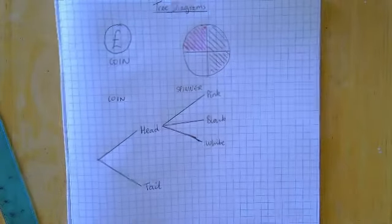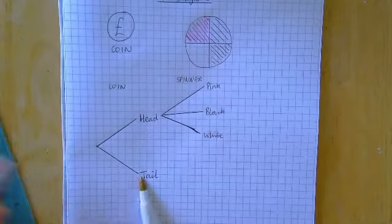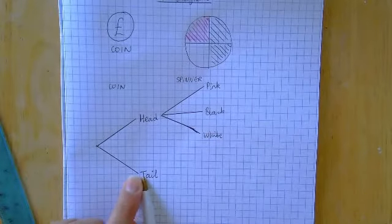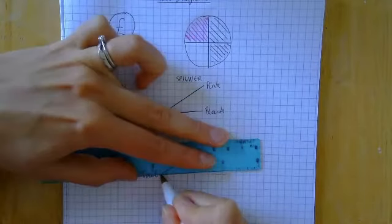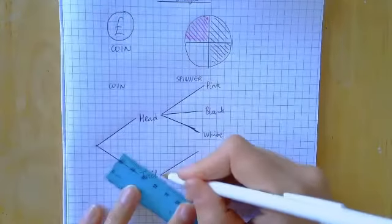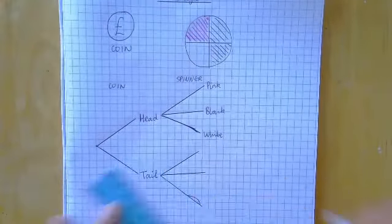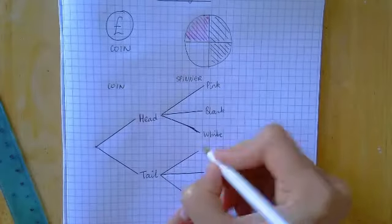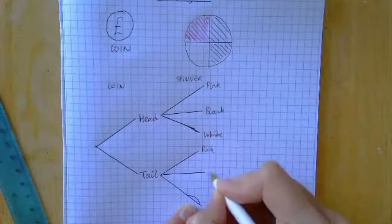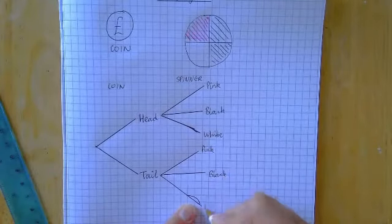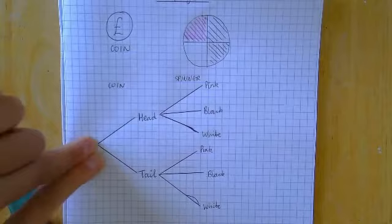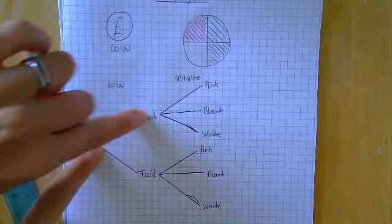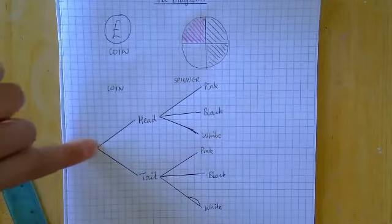Now imagine we got a tail on our coin and then spin the spinner. I've still got three options — I'm still going to either get pink, black, or white. Imagine walking along the diagram: you either get a head or a tail, so you're either going to walk along here or walk along there.